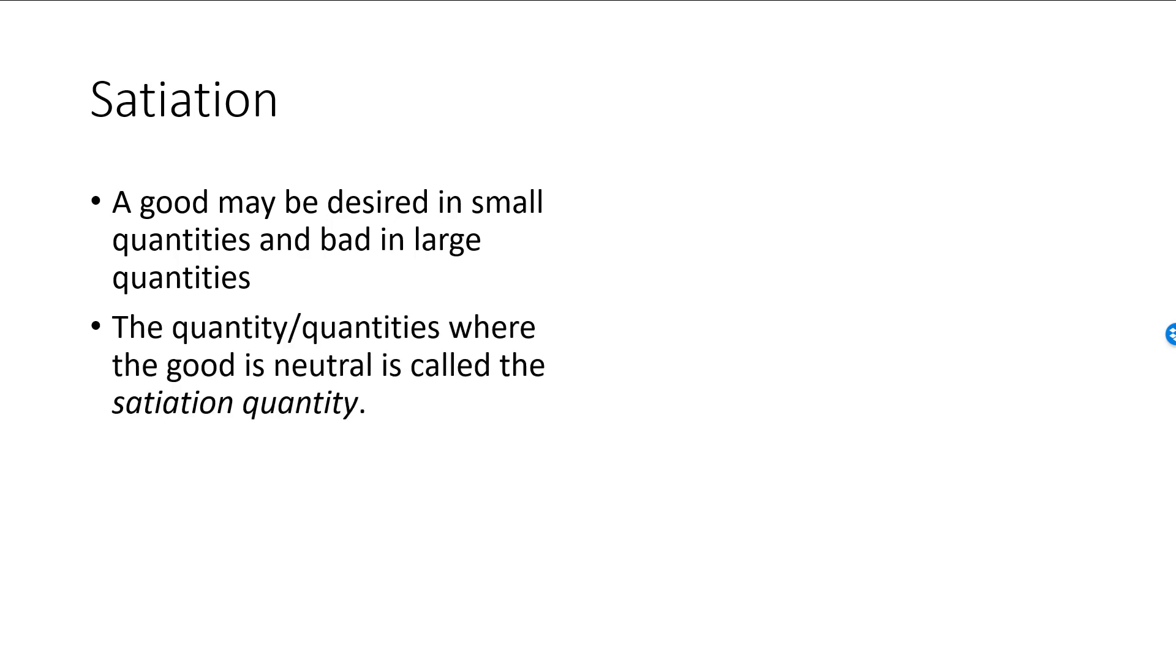Beyond the satiation quantity, the good becomes neutral and then bad. So what will the indifference curves look like when we have a satiation quantity for both goods? Well, we have a satiation bundle, which is the most desired bundle that we can ever reach. Moving away from this bundle in any direction will take you to a worse bundle.